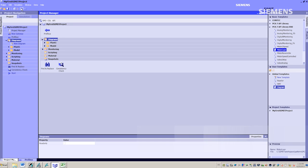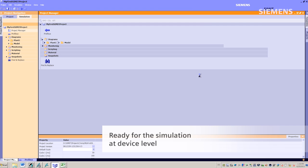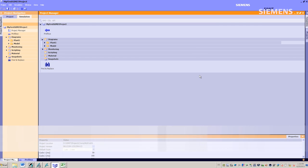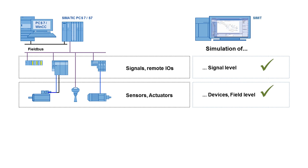You can also model the process and the technological characteristics of the system or machine to be simulated in SIMIT, for example in order to test sequential functions.